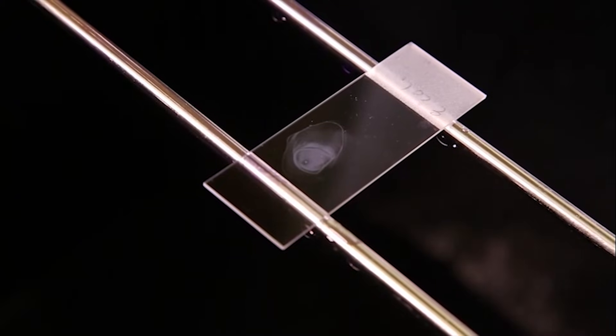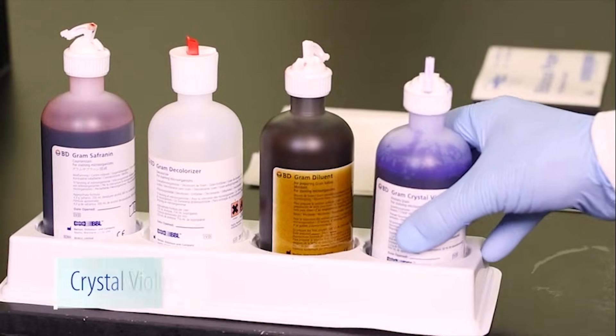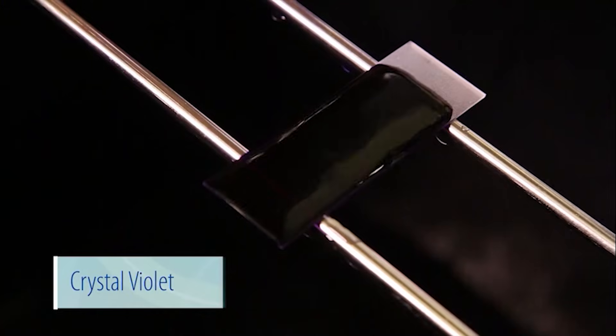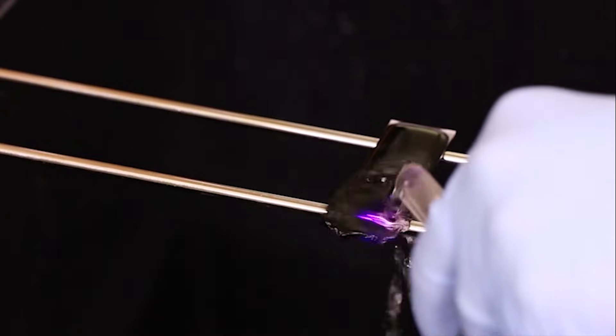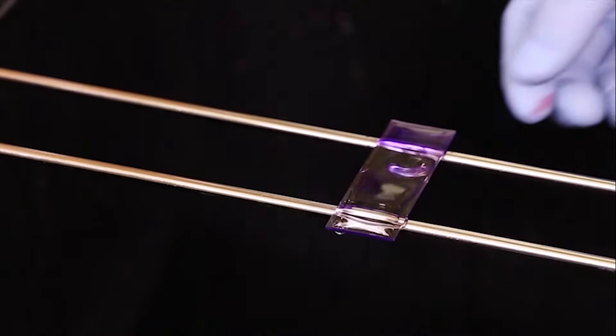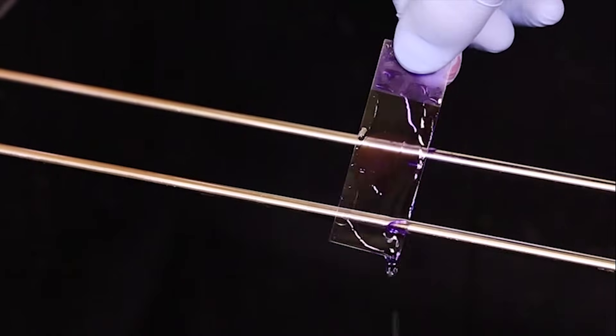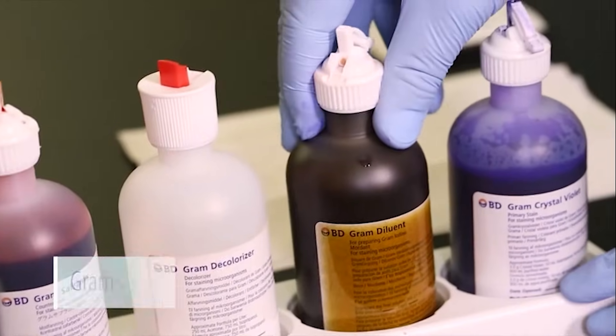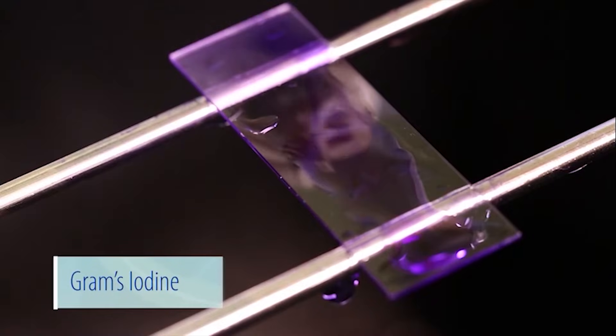Flood the slide with crystal violet. Wait at least 15 seconds, then gently rinse the slide with water. Tilt the slide to remove the excess water. Next, flood the slide with Gram's iodine.